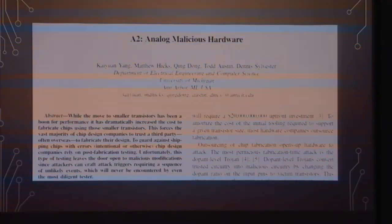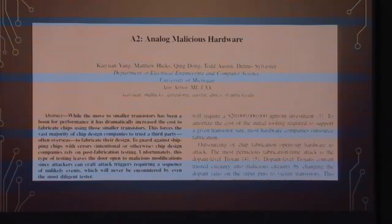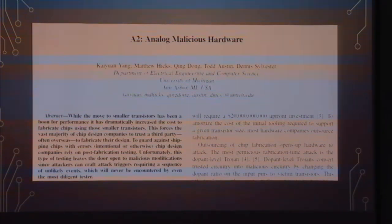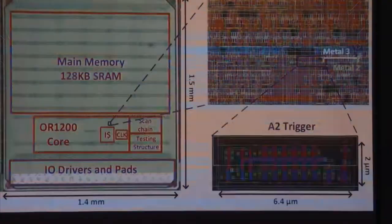I want to start by introducing some research that others have done. This paper won best paper at Oakland several years ago — it's called 'A2: Analog Malicious Hardware Trojans.' If you haven't read it, I strongly recommend it; many free copies are available by simply Googling the title. What they did is came up with a malicious hardware implant in an open-source x86 processor design. You can download it, modify it, and fab your own x86 processors.